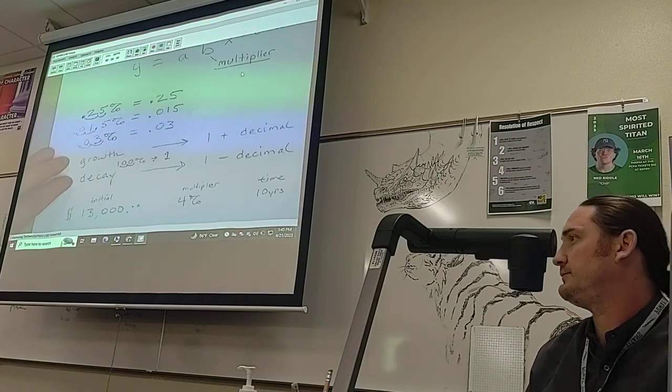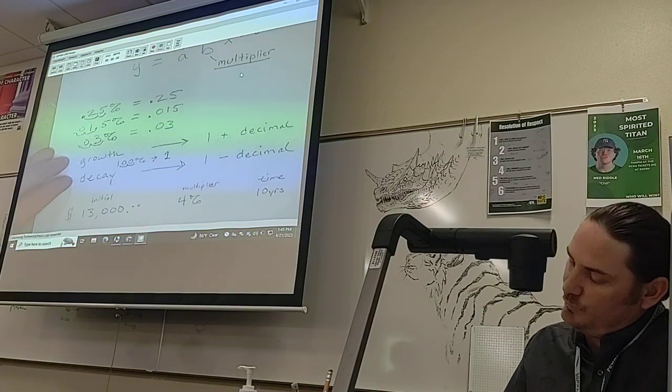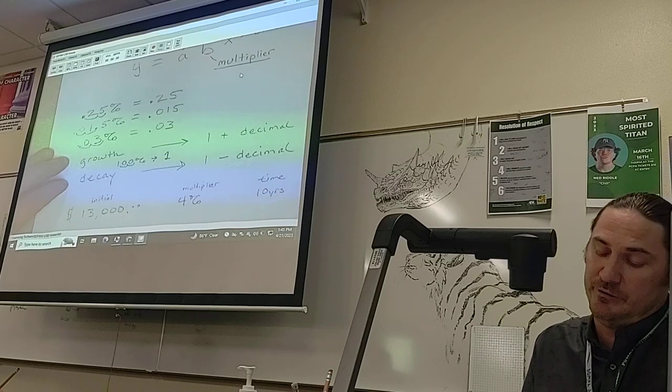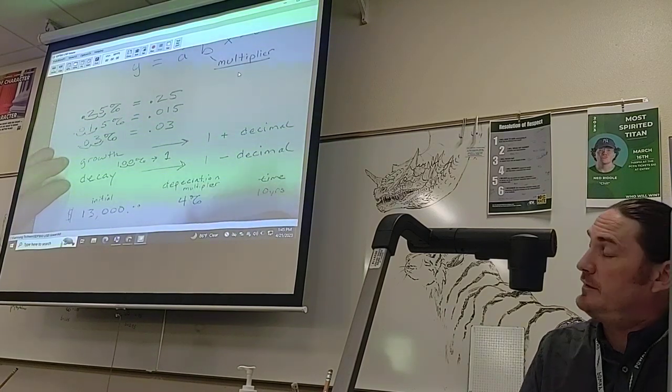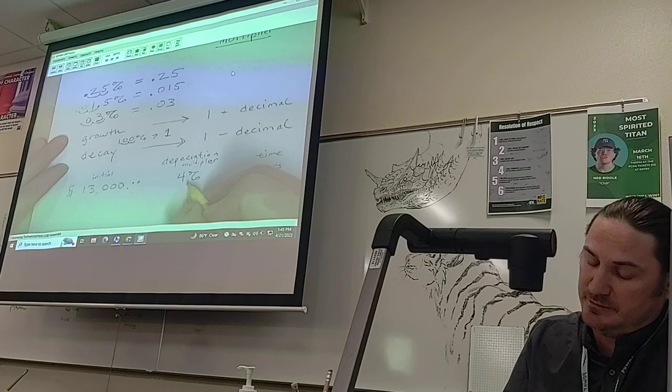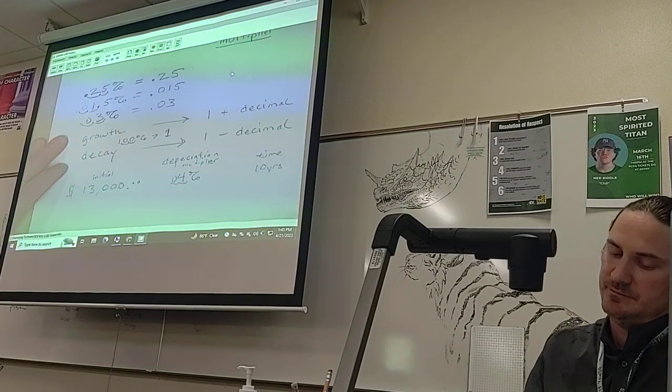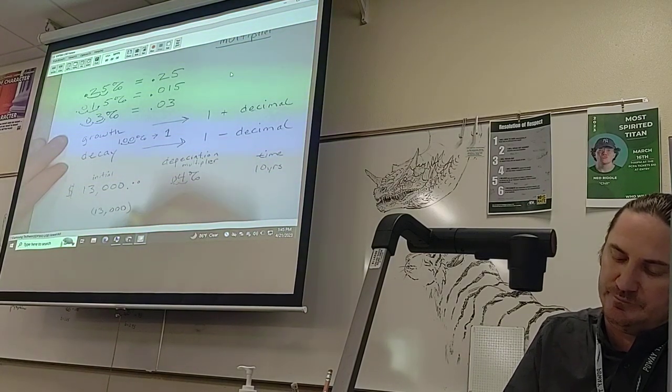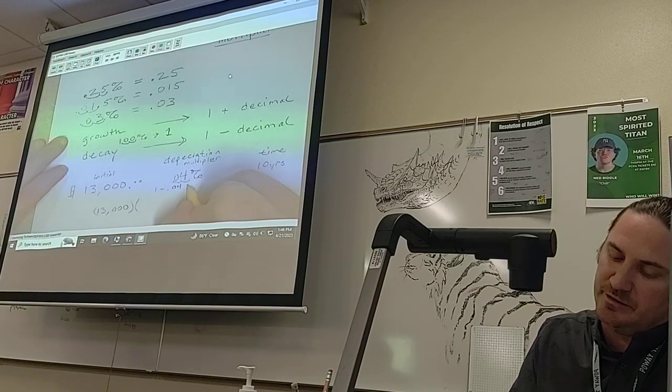Because it's one of those products where the value goes down, we know that we're going to have to do one minus the multiplier. So it's a depreciation problem or decay. Let's turn this percentage of 4% into a decimal. Move the decimal two places to the left—4% will become 0.04. In our calculators, we will have the initial amount, then we know that it's depreciation: one minus 0.04 is going to give us our multiplier.